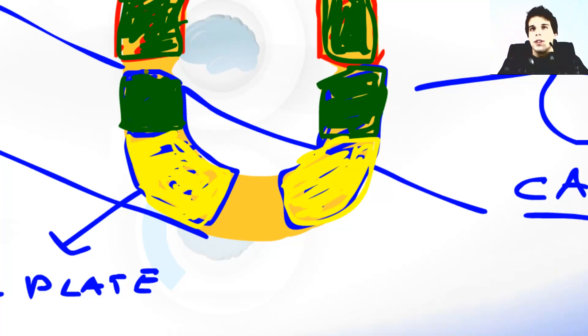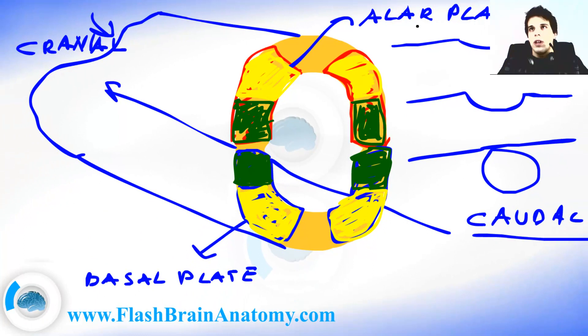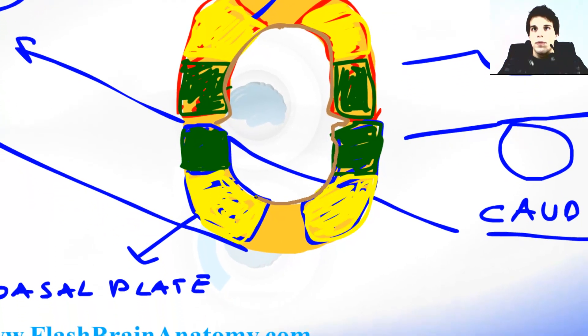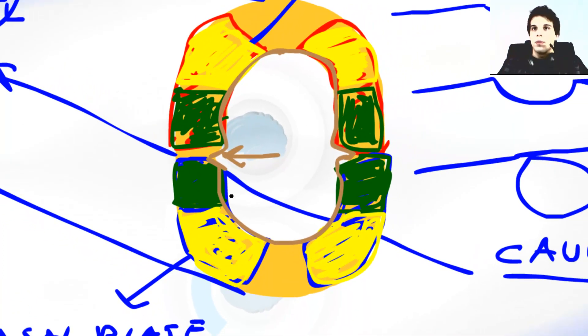So we had this part over here called the basal plate which is important for the motor functions and we had this part over here, the alar plate which is important for the sensory functions. The alar plate is on the dorsal side and the basal plate is on the ventral side. And I will just say that this zone that borders the central channel is called the ventricular zone. And this sulcus over here is the sulcus limitans. It separates the alar plate from the basal plate.